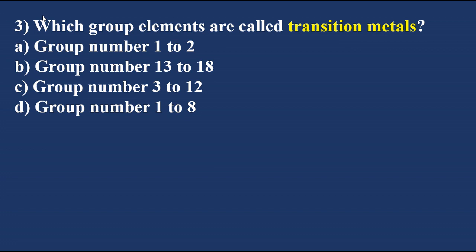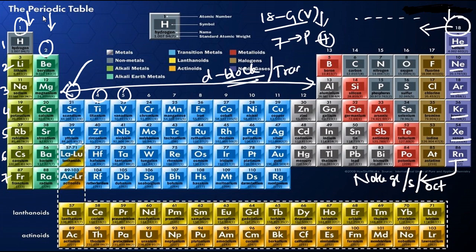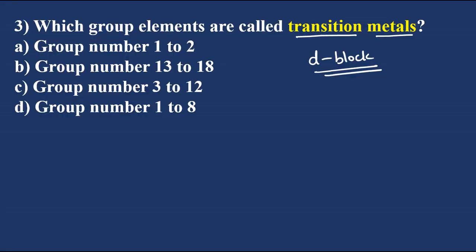Which group elements are called transition elements? Transition elements are also called d-block elements. You can observe the group numbers: they start from group 3 and end at group 12. So the answer is option C - d-block elements are called transition metals.